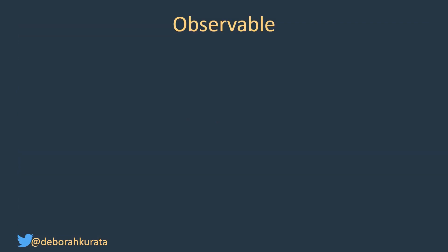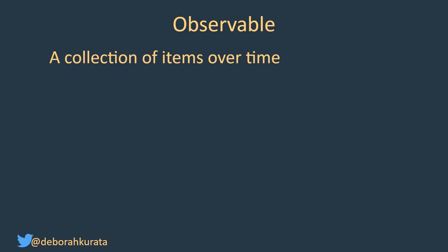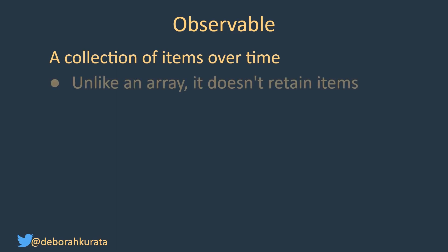The first term with RxJS is observable. And what is an observable? It's basically a collection of items over time. But unlike an array — because an array is also, of course, a different kind of collection — unlike an array, it doesn't retain those items.